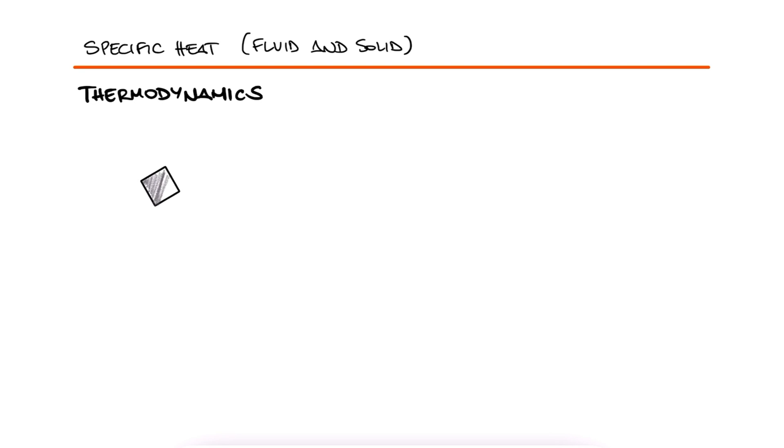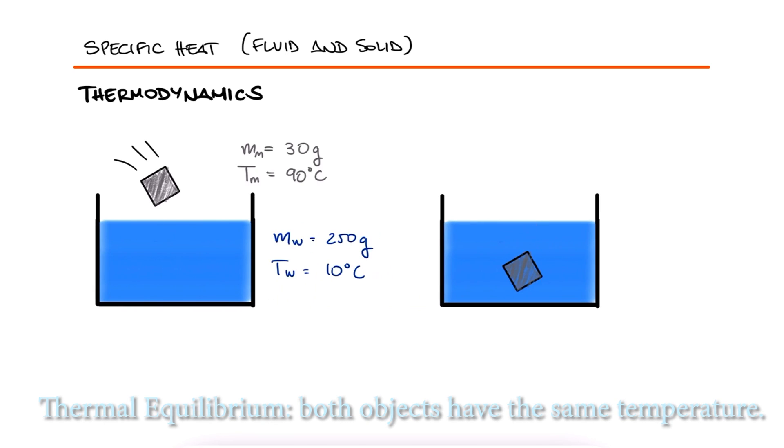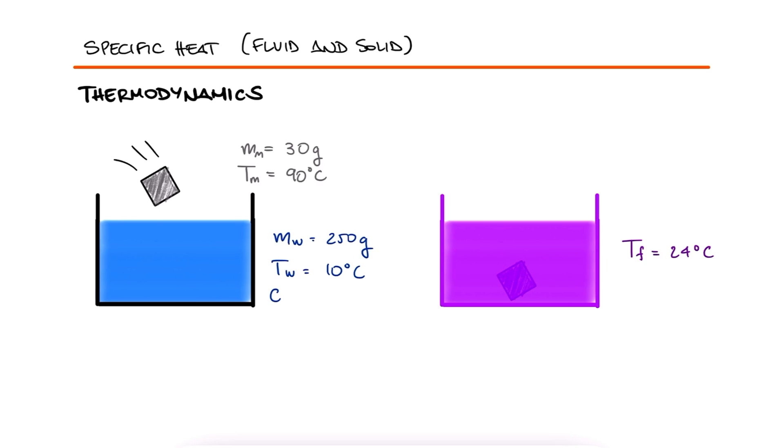A piece of metal of 30 grams mass at temperature 90 degrees Celsius is dropped into 250 grams of water at 10 degrees Celsius. They finally reach thermal equilibrium at a temperature of 24 degrees Celsius. If the specific heat of water is 1 calorie per gram degree Celsius, calculate the unknown specific heat.